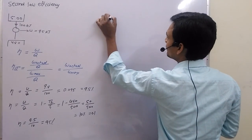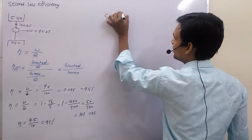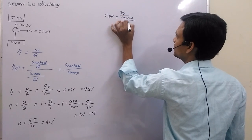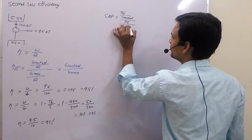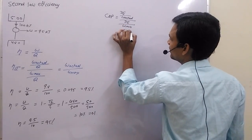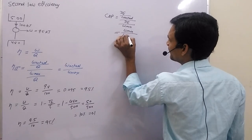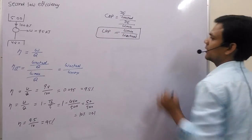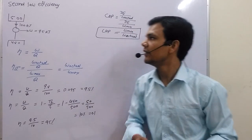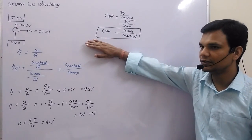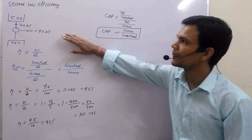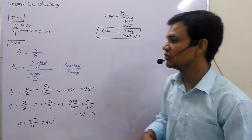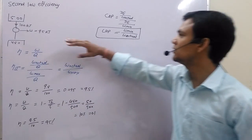If we talk in terms of COP, then the formula for secondary COP is desired effect upon W actual, divided by desired effect upon W minimum. So the formula for secondary COP will be W minimum upon W actual. This applies for refrigerators and heat pumps. This is our method of secondary efficiency, used to compare the actual situation with the best possible situation, expressed both in terms of efficiency and in terms of COP.